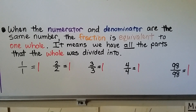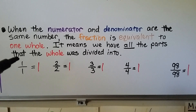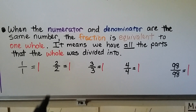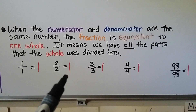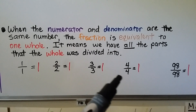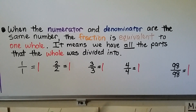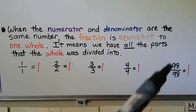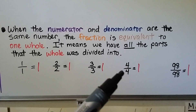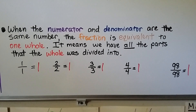When the numerator and denominator are the same number, the fraction is equivalent to one whole — it means we have all the parts that the whole was divided into. If we have a numerator of one and a denominator of one, it's equal to one whole. Two over two, we have two halves — equal to one. Same with three-thirds, four-fourths, and it would be the same if we had ninety-eight ninety-eighths. It's like saying we have something split into this many parts, but we have all the parts. If we have a candy bar split into four parts and we have all four parts, we have the whole candy bar.